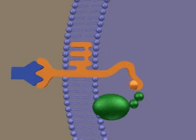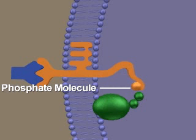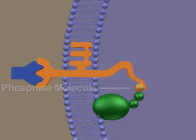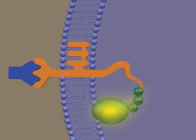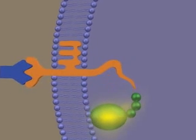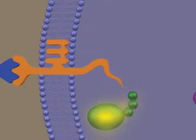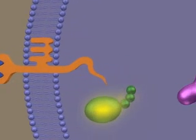In one type of signal transduction, the transfer of a phosphate molecule relays the signal. A cascade of phosphorylations can amplify the original signal.